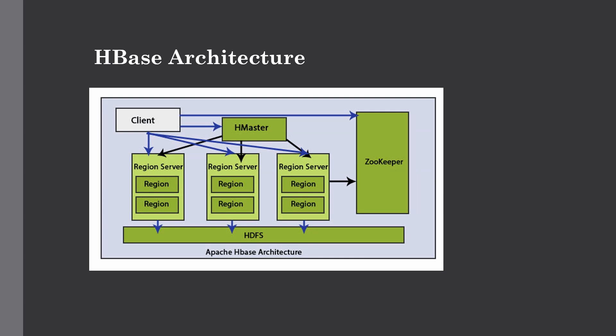Now let's talk about the HBase architecture. In HBase, tables are split up into multiple regions — not geographical regions, but divided by column families into stores. Stores are files saved on HDFS, since HBase uses HDFS for storing data. In this representation, you can see different region servers with different regions, all using HDFS as a storage layer, and these are operated by the master node, also known as HMaster.